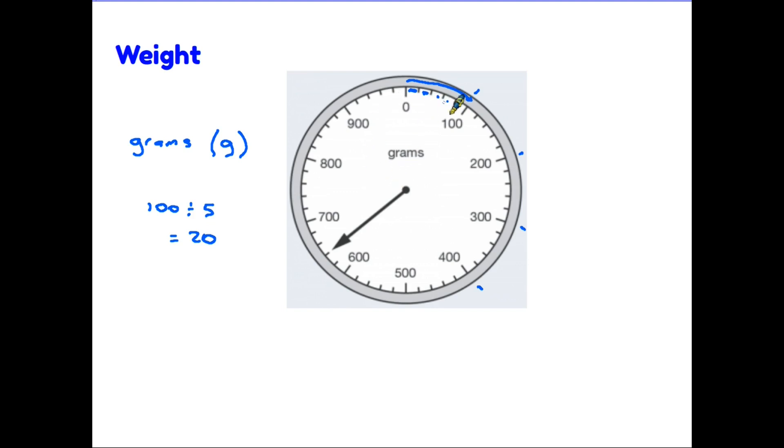So for instance, when we look at this particular scale, and look at the arrow to find out what weight it is showing, it is actually past the 600, and it is 60 one, two spaces. So 20, 40, that is 640 grams. Again, a little bit of care needed, just to make sure we are measuring the scale correctly.